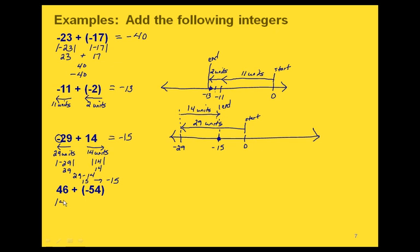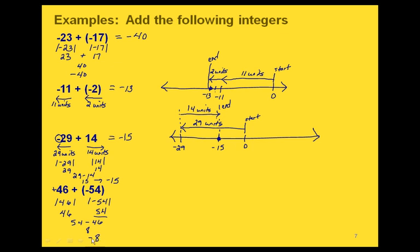Finally for this example, let's go back to the absolute value method. Notice in this problem we have two different signs — a plus for the 46 and a minus for the 54. So our absolute values are 46 and 54. The 54 is bigger, so we're going to subtract: 54 minus 46 gives us 8. Then we take the sign that went with the 54 in our original problem, which was a negative, so our answer ends up being negative 8.